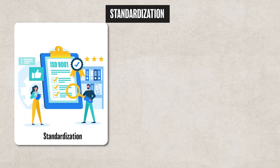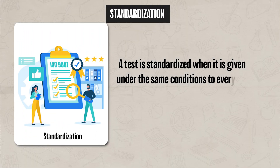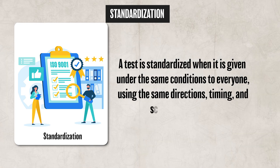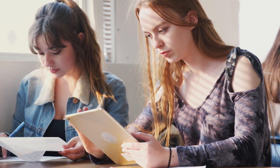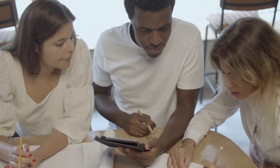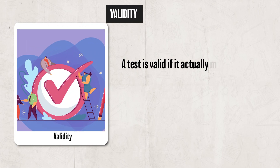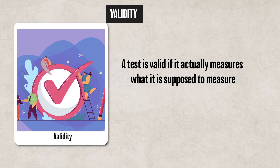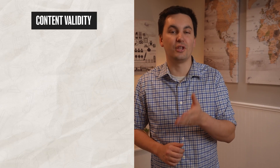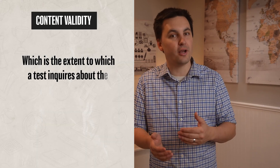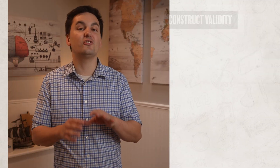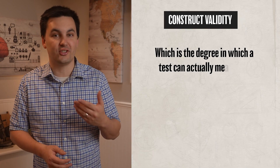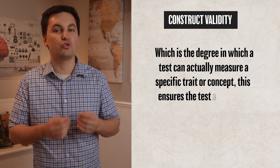The first psychometric principle is standardization. A test is standardized when it is given under the same conditions to everyone, using the same directions, timing, scoring, and procedures. This helps reduce bias and allows for a fair comparison to be made. The second is validity — a test is valid if it measures what it's actually supposed to measure. We can break validity down into four different types. The first is content validity, which is the extent to which a test inquires about the information or behaviors of interest. Next is construct validity, which is the degree to which a test can actually measure a specific trait or concept.